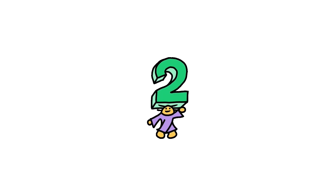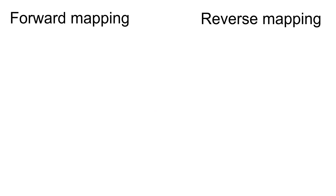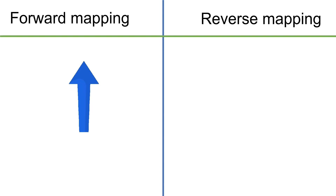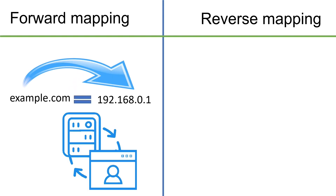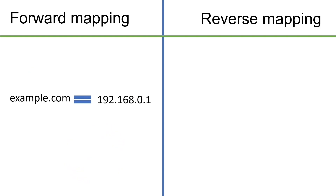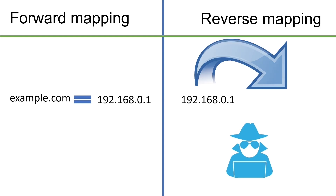In the DNS system, there are two types of mapping: forward mapping and reverse mapping. The DNS system was mainly designed for forward mapping. In forward mapping, name servers translate names into IP addresses. Later, they added reverse mapping to the DNS system for security and diagnostic purposes. In reverse mapping, name servers translate IP addresses into names.